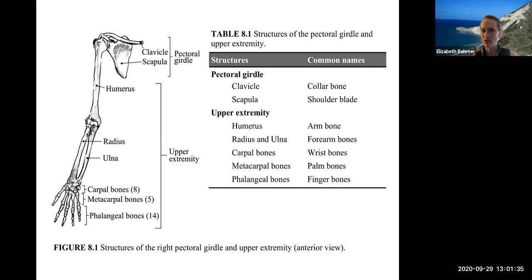Here we have the pectoral girdle and the upper extremity. The pectoral girdle includes the clavicle and scapula. In the upper extremity we have the humerus, radius, and ulna. The radius will always be lateral, closer to the thumb, and the ulna is the medial forearm bone. The carpal bones are your wrist bones, you have eight of them, then five metacarpal bones in the palm, and 14 phalangeal bones in your digits.